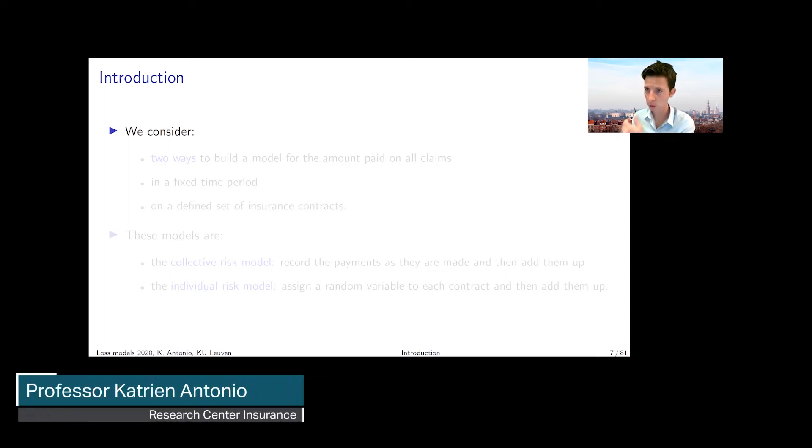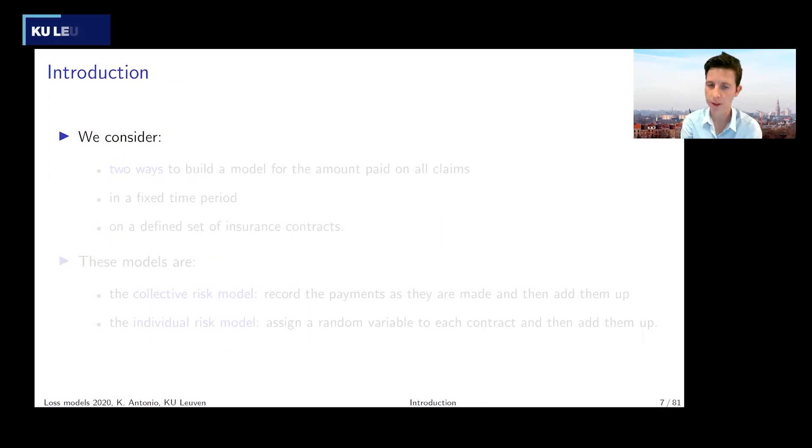Let's make it more difficult now. What if the losses are not fixed, are not observable? If we need to model them, what if we go for other claim count distributions? What should be done then?